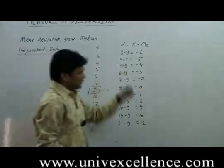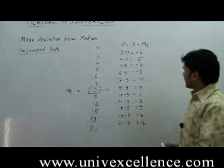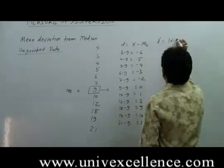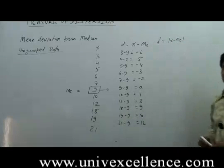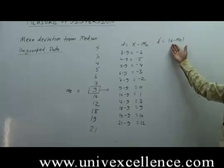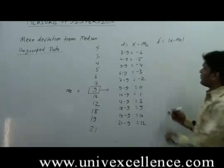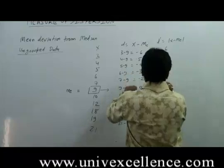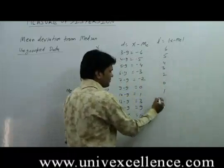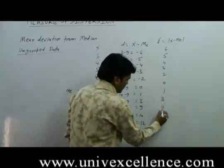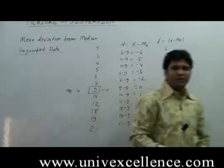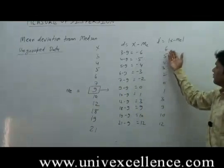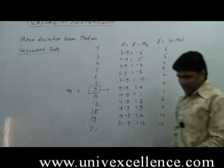This is the deviation x minus M. Now we would ignore the negative sign — that means we take the absolute value of each deviation. For finding out the mean deviation from the median, we take the deviation in absolute form: so −6 becomes 6, −5 becomes 5, −4 becomes 4, −3 becomes 3, −2 becomes 2, and 0 stays 0. The positive values remain as they are: 1, 3, 9, 10, 12. Only the magnitude is taken — the negative sign is ignored.